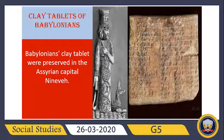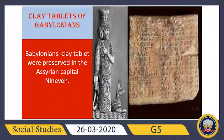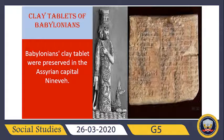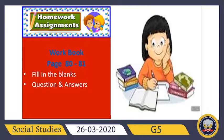The Assyrians received these clay tablets from Babylonia and placed them in the library of the Assyrian capital, Nineveh. So all those tablets were kept in the library of the capital city.